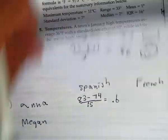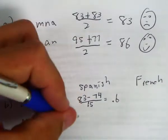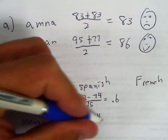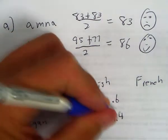And Megan, on the Spanish exam, she got a 95. So she got a 95 minus a 74, so she got a 1.4.